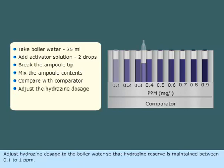Adjust hydrazine dosage to the boiler water so that hydrazine reserve is maintained between 0.1 to 1 parts per million.